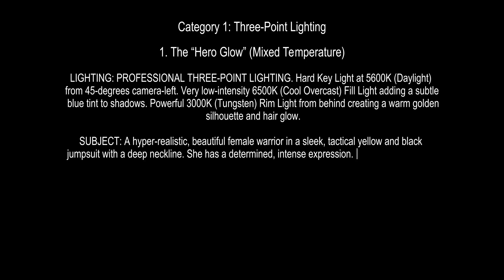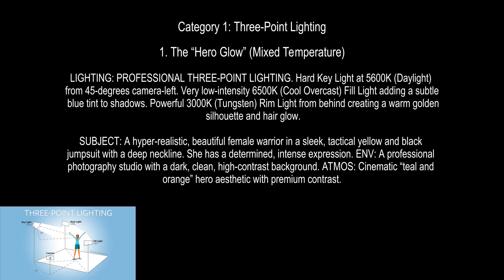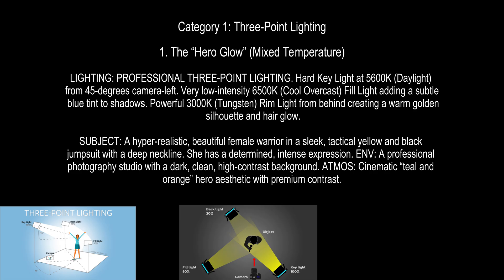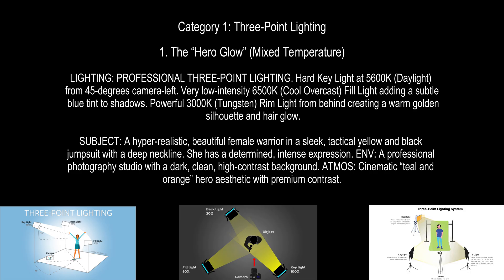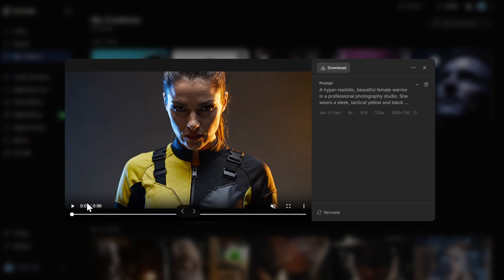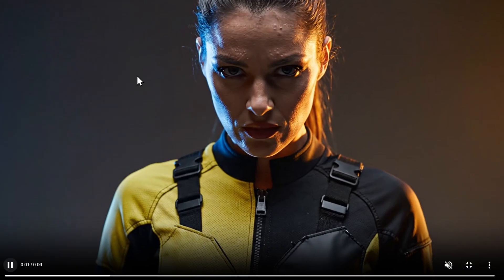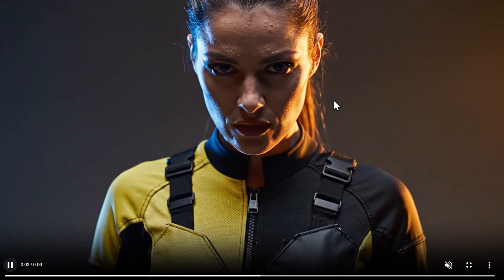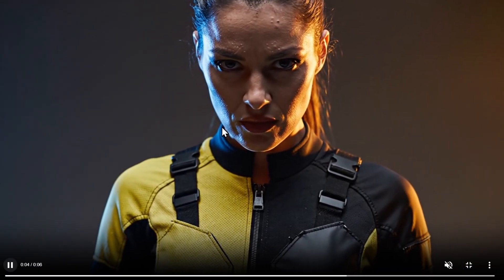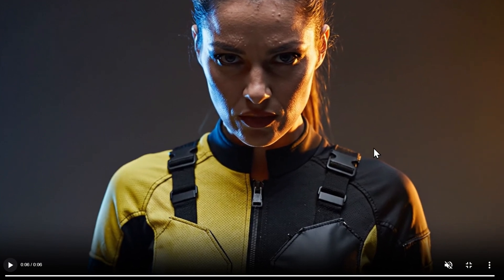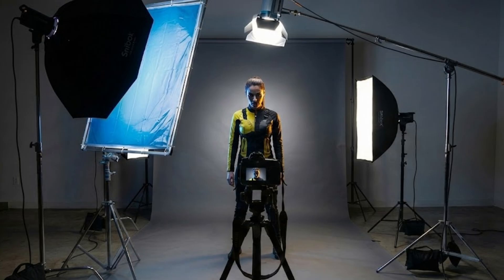First we have the Hero Glow in mixed temperature. The key light is around 5000 Kelvins from 45 degrees camera left, then we have a powerful rim light fill at 3K. Here is our hero — the lights are coming from this side and from this side, and I'll explain everything.